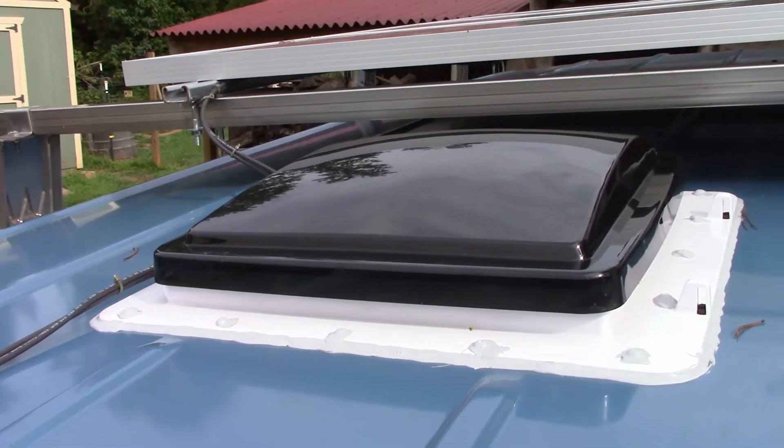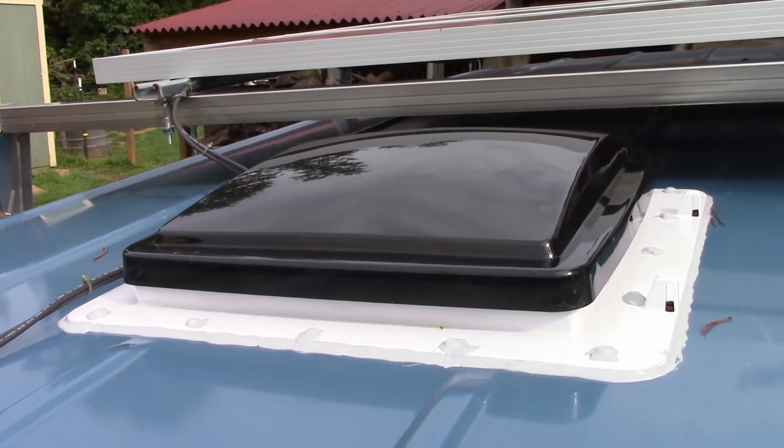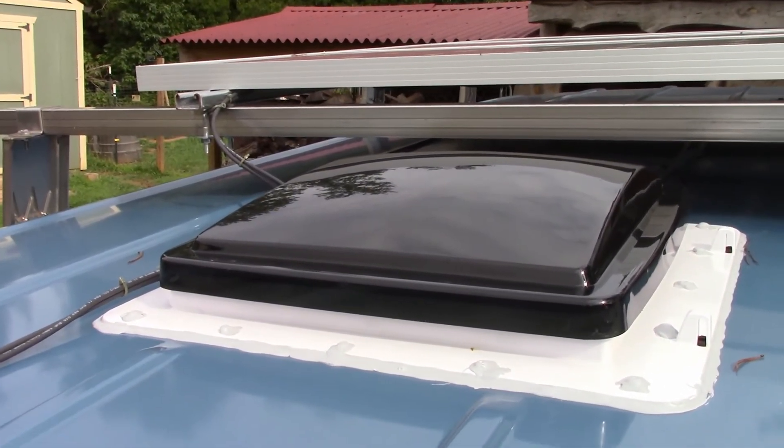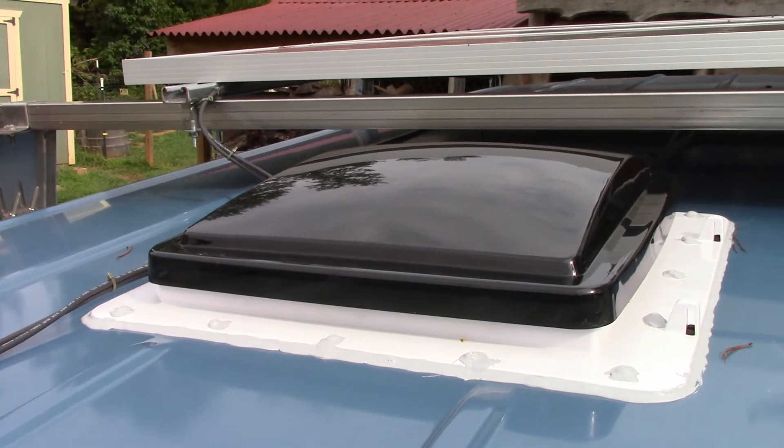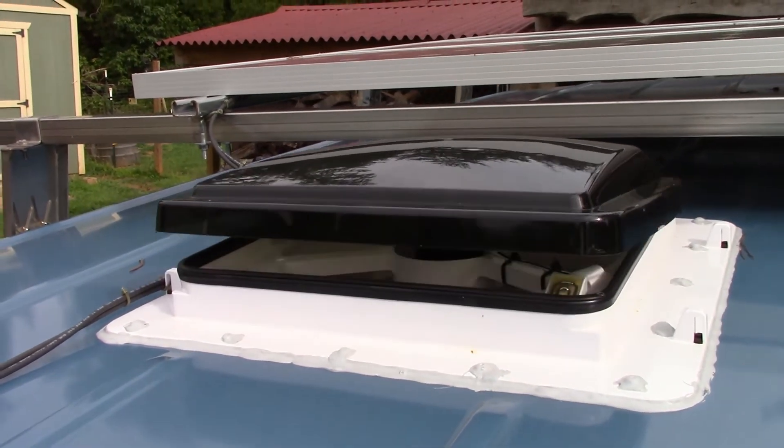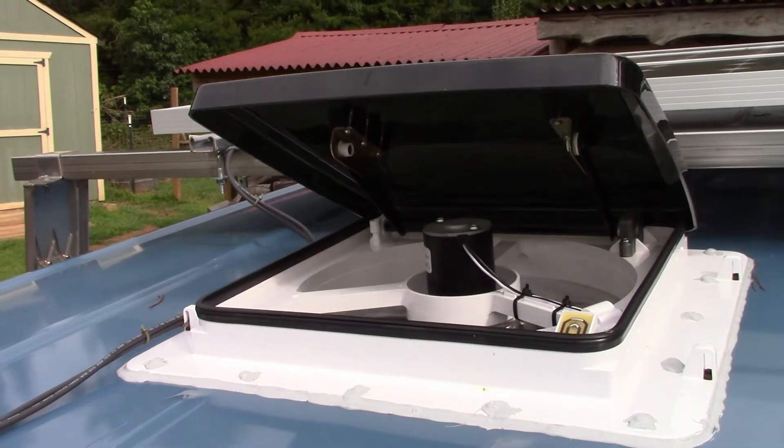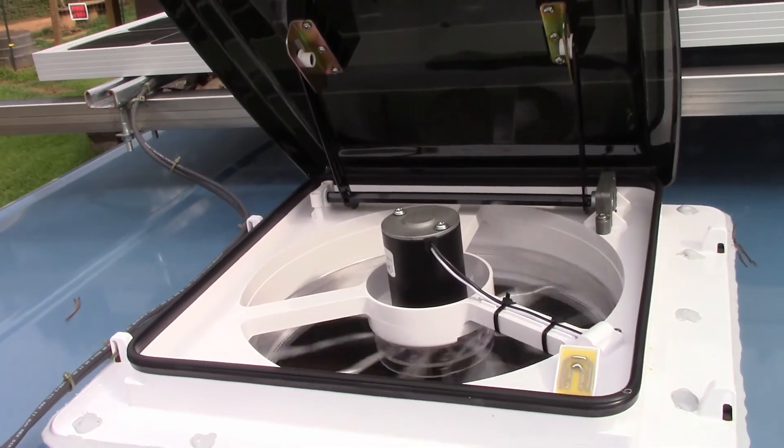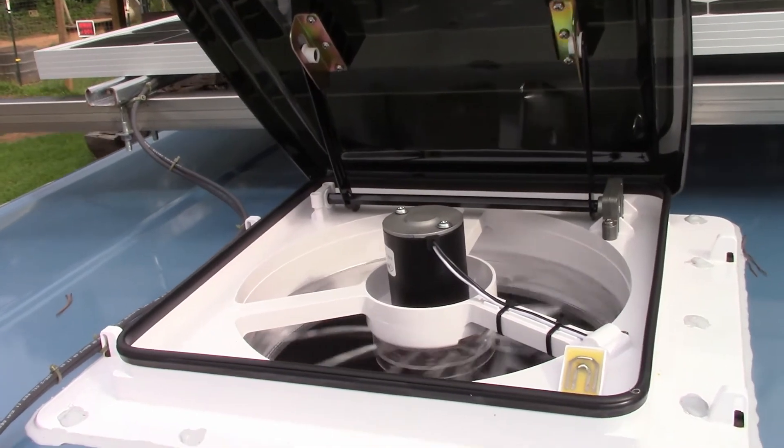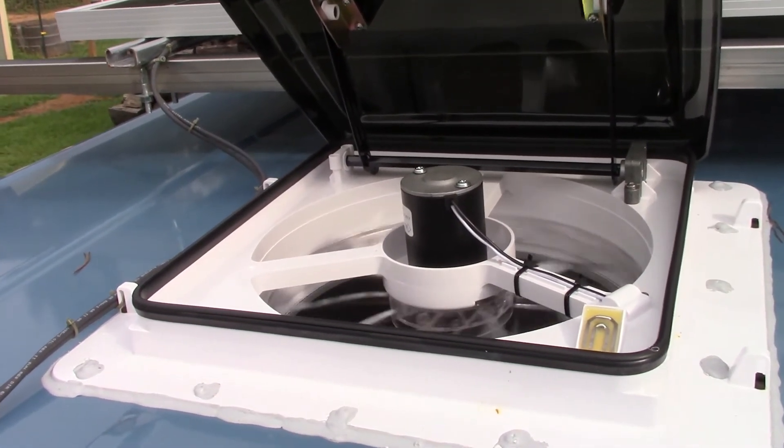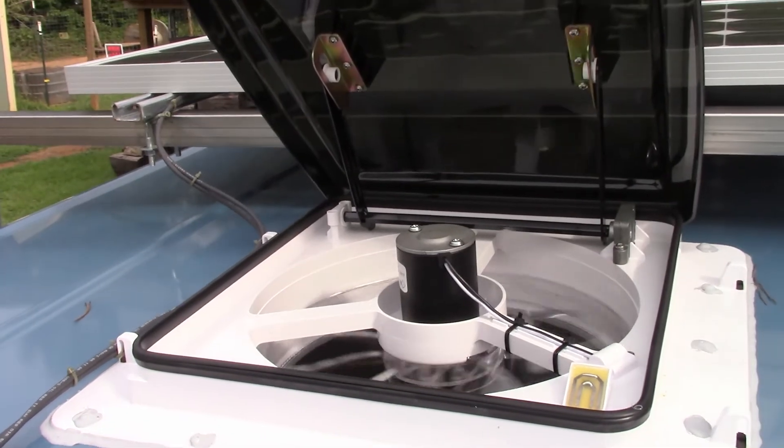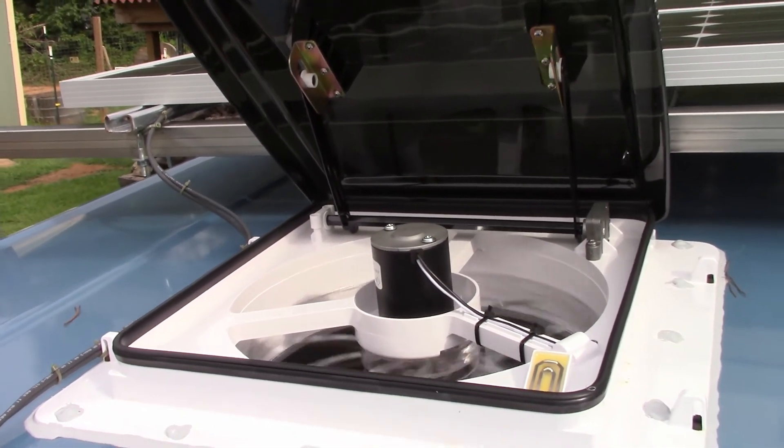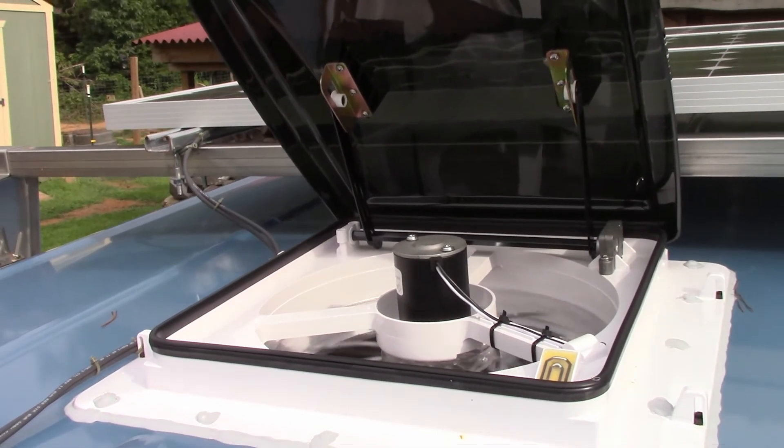Here we go. We're going to start the unit up here, and you'll be able to see how this opens up automatically. There goes the vent opening. The fan is starting up. I have it on low speed. That little yellow thing on the right side there, that is the rain sensor in case it starts to rain. Then it will automatically shut down. Let's go inside and have a look.